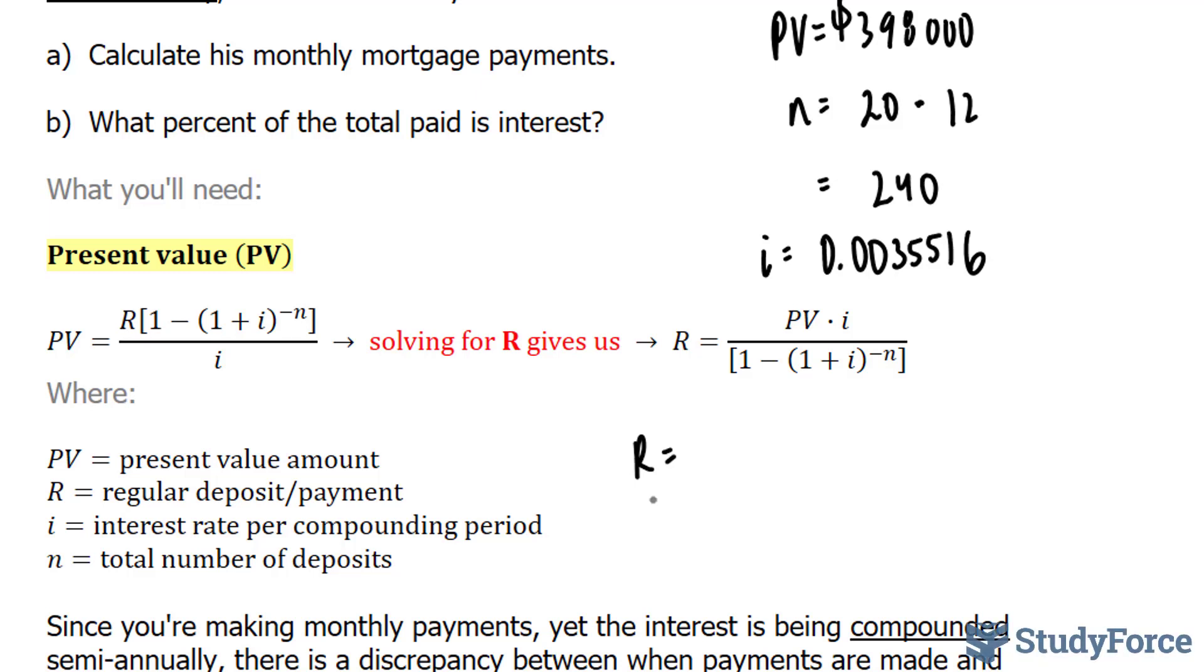We end up with R is equal to PV, which is 398,000, times 0.0035516, all divided by bracket 1 minus 1 plus 0.0035516 to the power of negative 240.